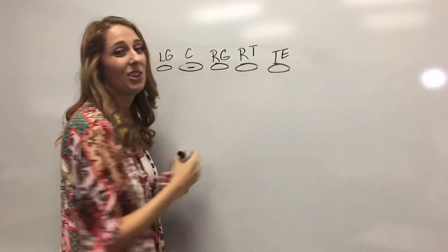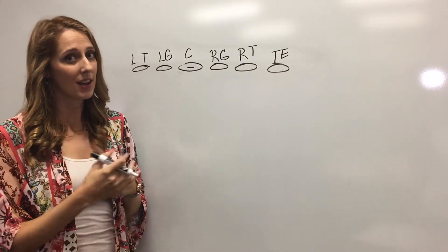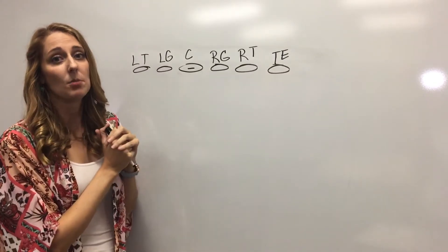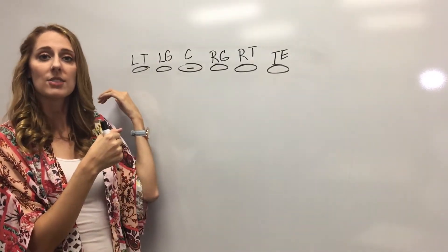In the game of football you can have one tight end as I've shown up here. You can have two tight ends on either side of our tackles and that's called double tight. Now if you only have one tight end he can either be on the right side or on the left side.